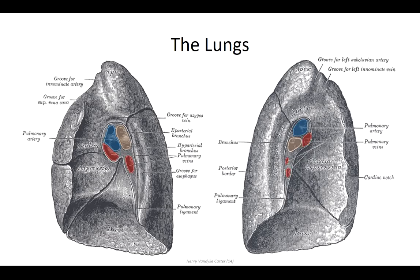A number of smaller structures pass through the root of the lung including nerves and lymphatics. Of particular note are the bronchial arteries and veins, which are found just posterior to the primary bronchi. Despite the volume of air that passes through the lungs with each breath, there are parts of the lung that do not receive sufficient oxygen to serve its needs. The bronchial arteries branch off the thoracic aorta to provide this oxygen supply to the lung structures, with blood returning to the azygous vein through the bronchial veins.